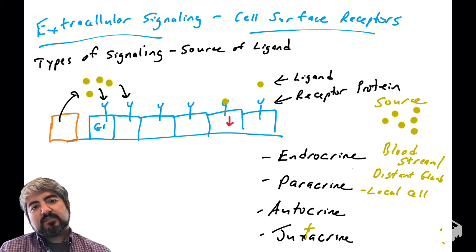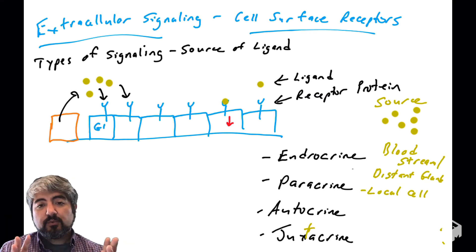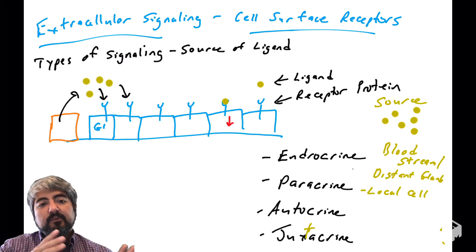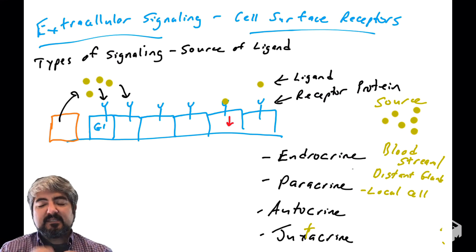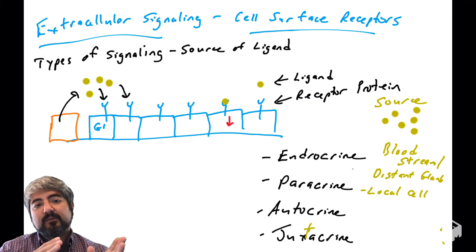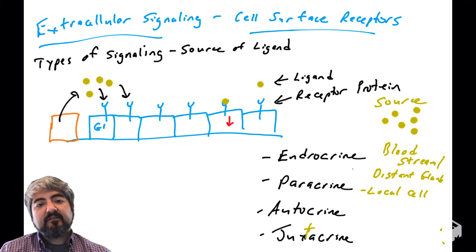Paracrine signaling, which is what we talk about a lot when we talk about cancer biology, is local signaling. Paracrine might involve a local cell in a tissue or an organ. Cells in that tissue release signaling molecules, and those molecules will bind to receptors on local cells. So paracrine signaling typically happens within tissues or organs — it's one group of cells telling another cell what to do by releasing signaling molecules that bind receptors on the surface of nearby cells.